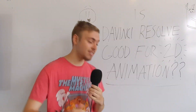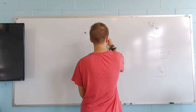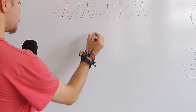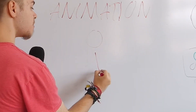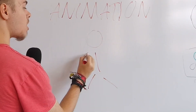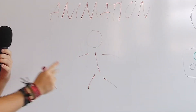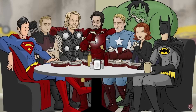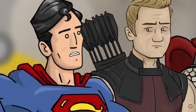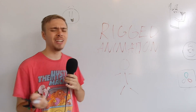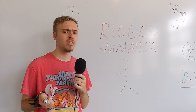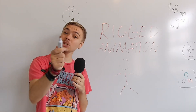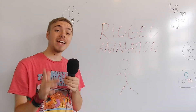The technique I'm talking about is rigged animation. Basically how it works is you draw your character, but every part that you want to move, you draw as a separate object. Then later you can put them back together and move the parts separately, kind of like a puppet. The best example of this style of animation I can think of is the channel How It Should Have Ended. Of course they don't use DaVinci Resolve, but that doesn't mean you can't do it in Resolve. So I decided to put it to the test.